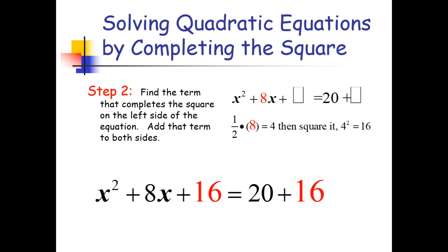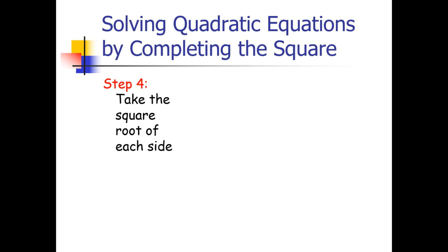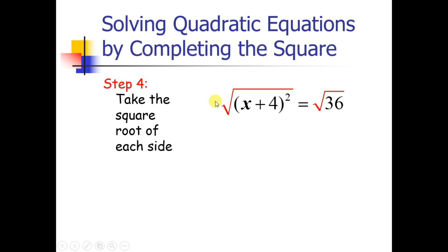For the third step, we factor the perfect square trinomial on the left side and simplify the right side. For step 4, we take the square root of each side, canceling the squared on the left, giving us x plus 4 equals plus or minus 6, since the square root of 36 is 6. That is our result.